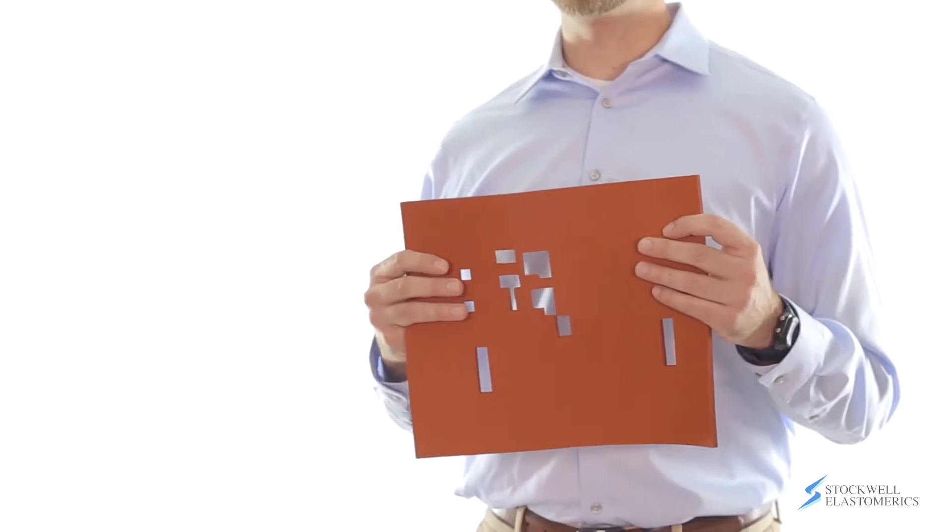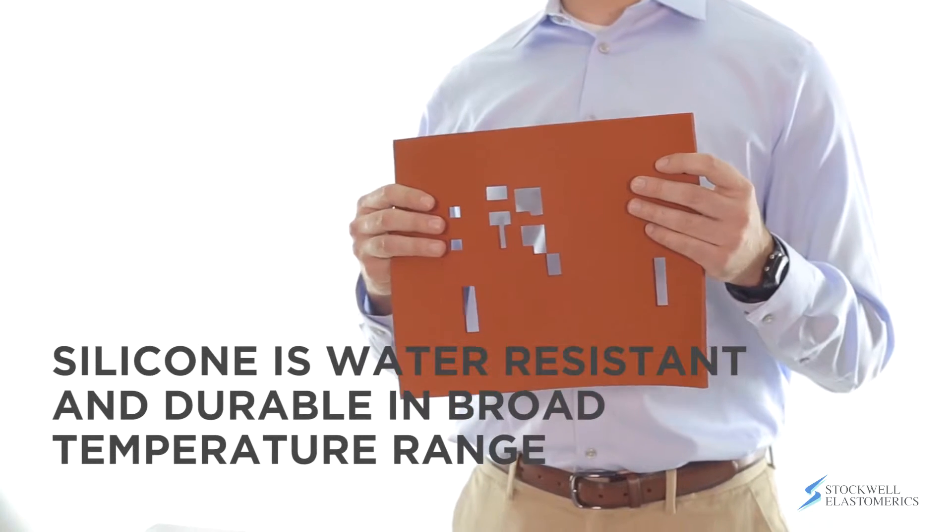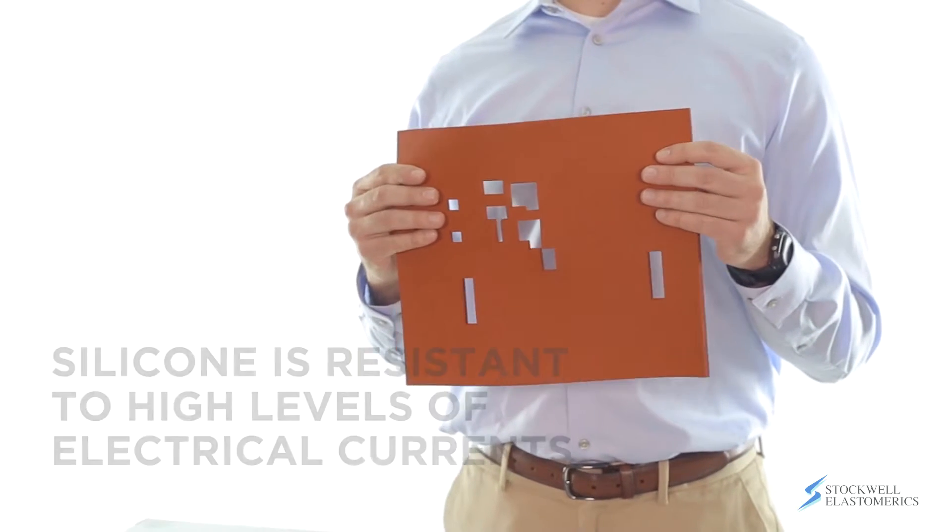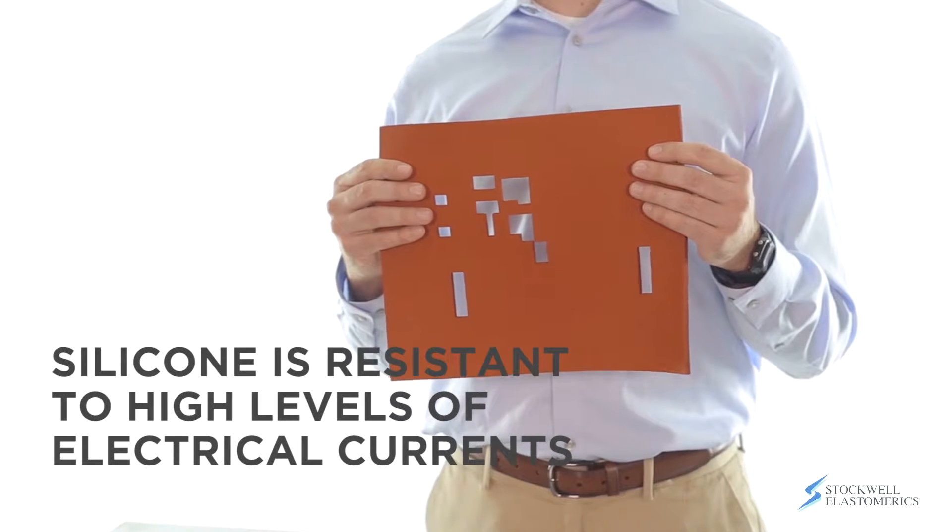This is silicone sponge and it has many unique properties like resistance to water and resilience over a broad temperature range. Silicone also has a very high resistance to electrical currents.